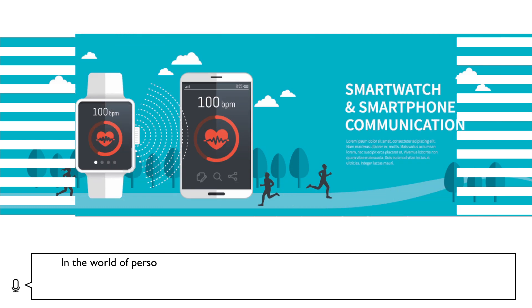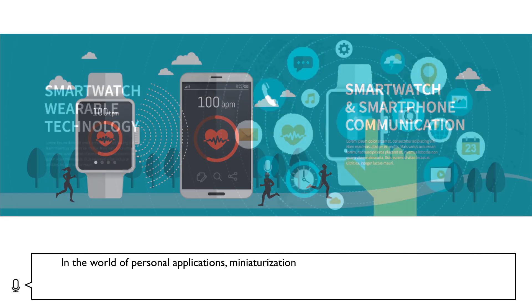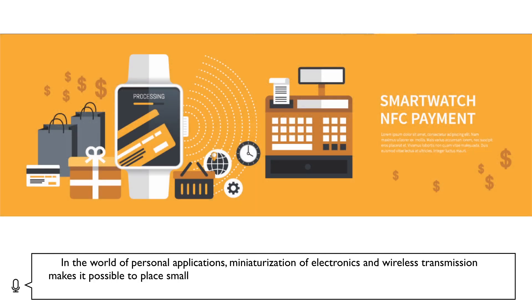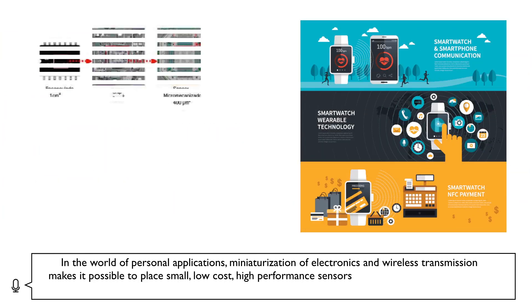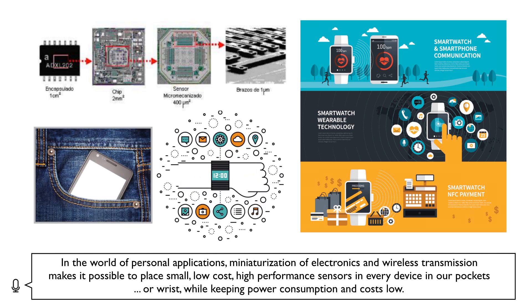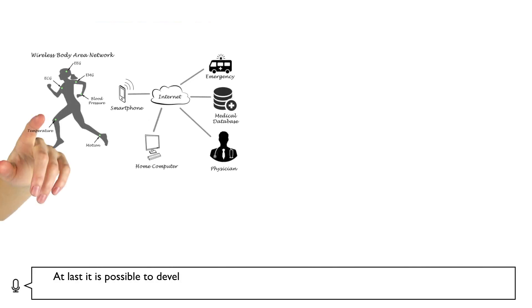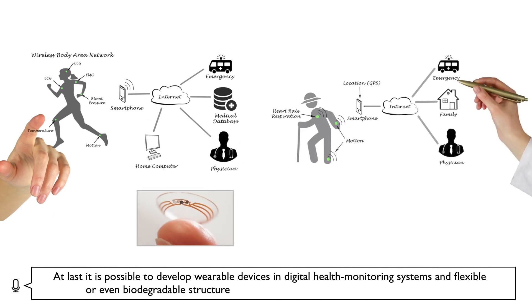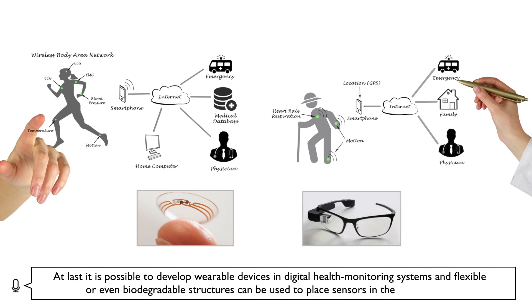In the world of personal applications, miniaturization of electronics and wireless transmission makes it possible to place small, low-cost, high-performance sensors in every device in our pockets or on our wrist, while keeping the power consumption and costs low. It is now possible to develop wearable devices in digital health monitoring systems, and flexible or even biodegradable structures can be used to place sensors in the human body.